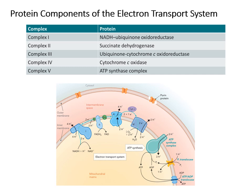This slide summarizes the four complexes of the electron transport chain we'll go over in this lesson. Right after those four complexes is the ATP synthase, often called complex five. Together, the electron transport chain and ATP synthase ultimately produce ATP.